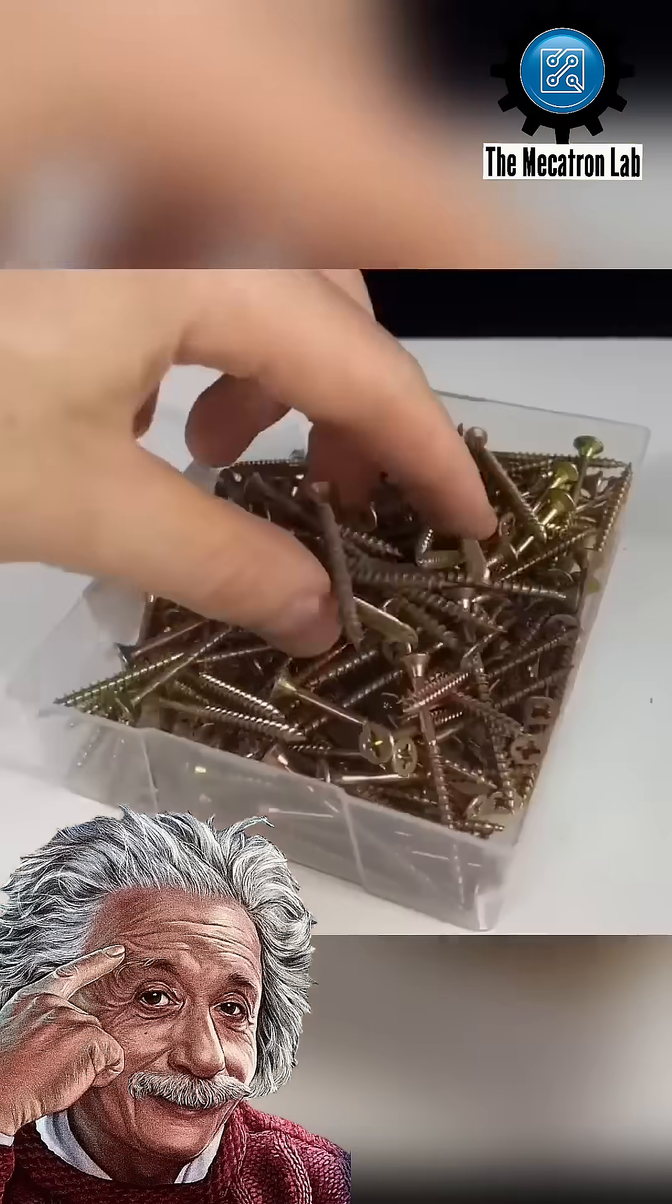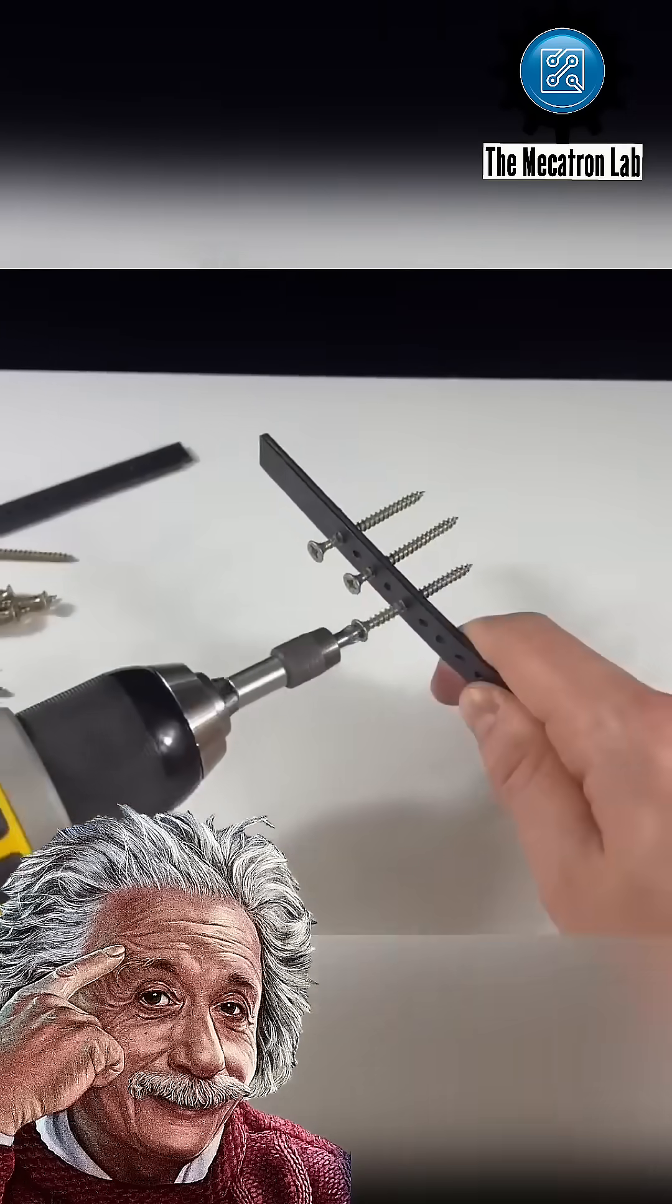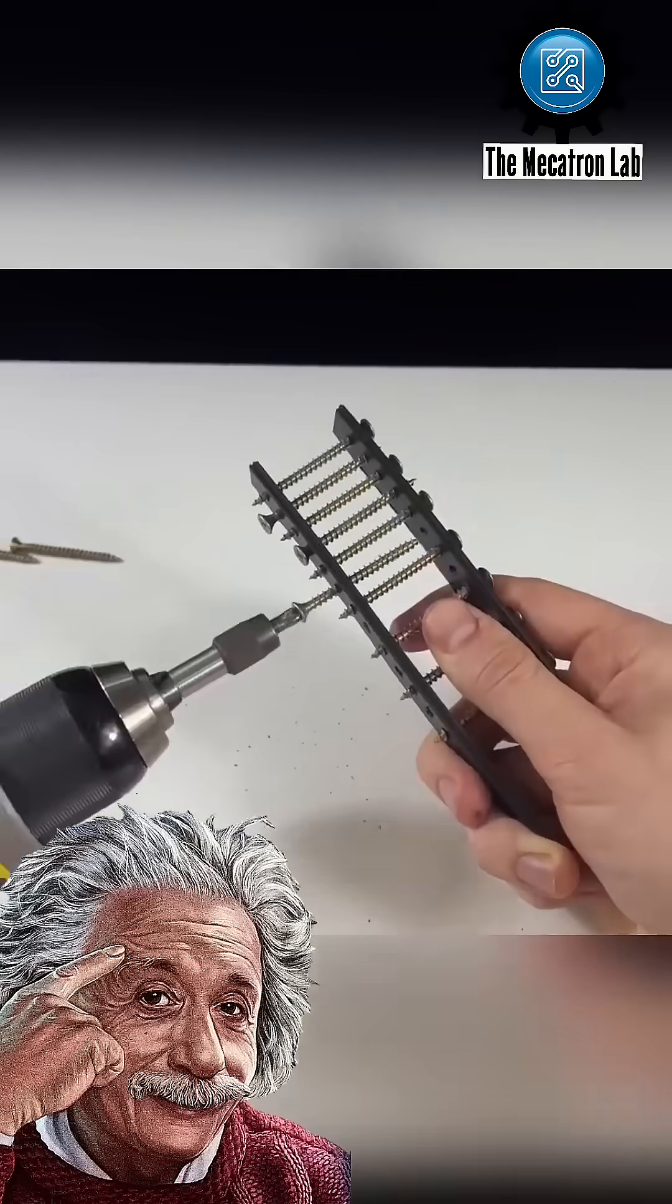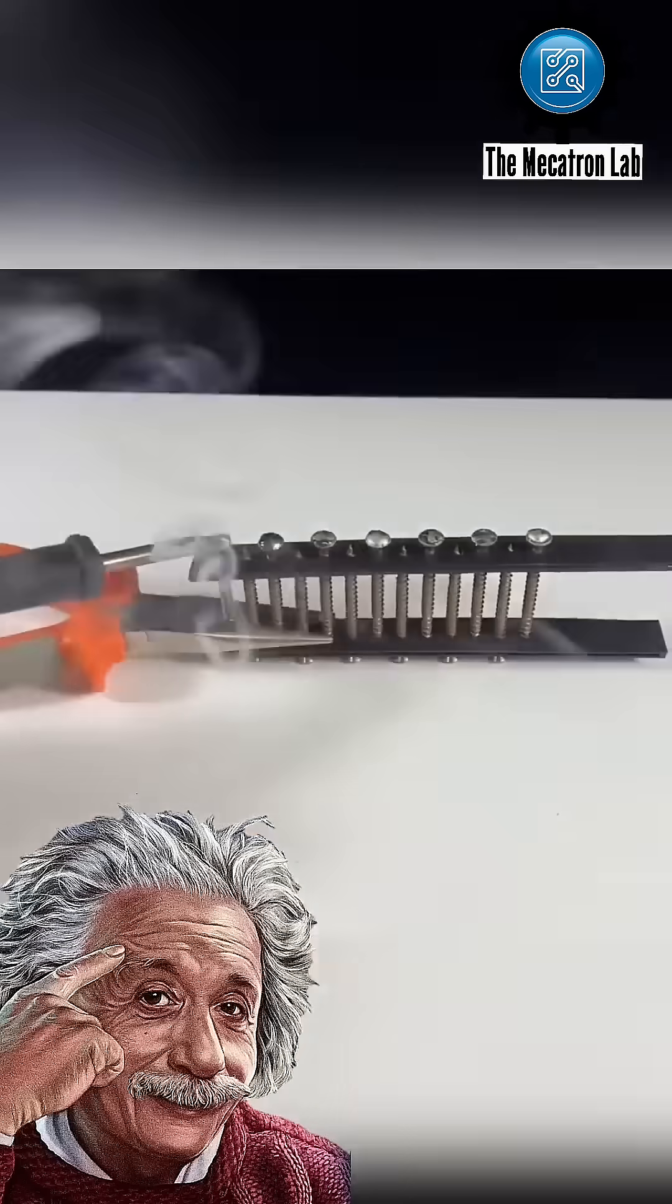This man's passion for chemistry has led him to build an electrolyzer to produce hydrogen from simple items such as screws, electrical cables, a glass jar, and a 9-volt battery.